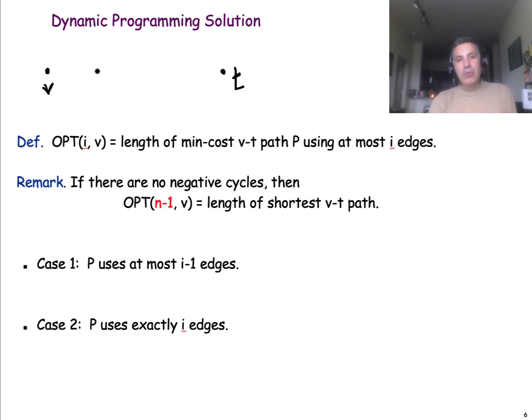What is the minimum cost path we can find from V to T if we can only traverse I edges? For example, if I is equal to 1, perhaps there is no path that can take us from V to T. In that case, you would say that the minimum cost is infinite. If I is equal to 2, it may be that there is a path that can take us from V to T, but it may have a large cost, say, of 10. If I becomes 3, however, it may be that we can find a better path that can take us from V to T, say, with a cost of minus 1.